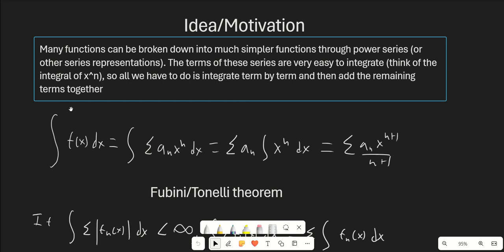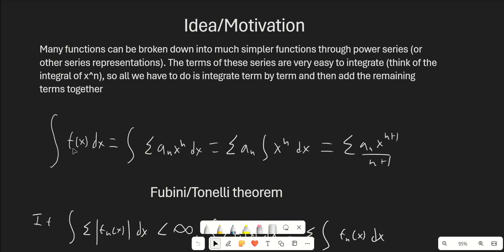Here's a quick example. If we have some integral of f of x, we rewrite f of x as the sum of a_n x to the n dx. Then we interchange the sum and the integral sign, so we get the sum of a_n times the integral of x to the n dx, and we end up with the sum of a_n x to the n+1 over n+1.